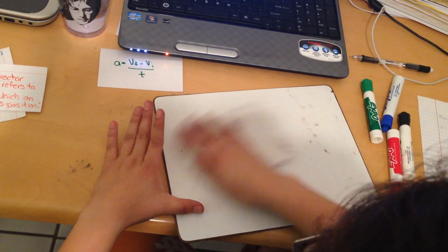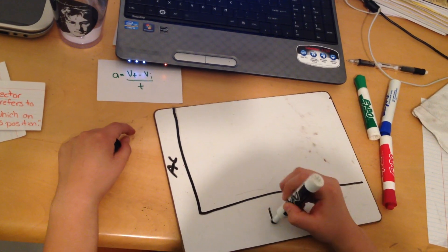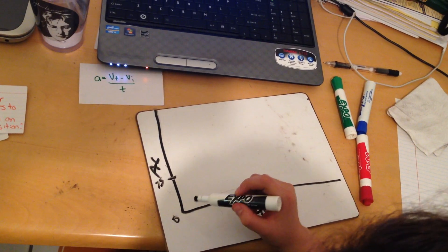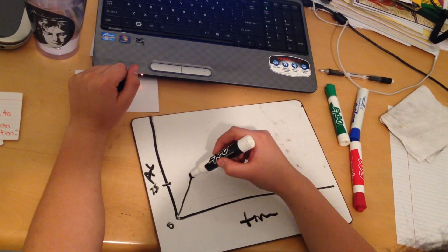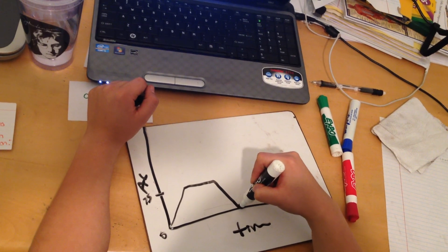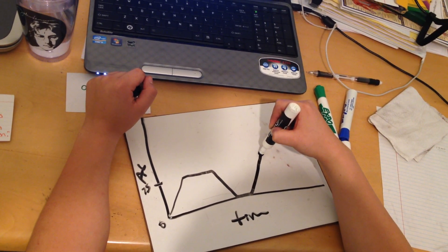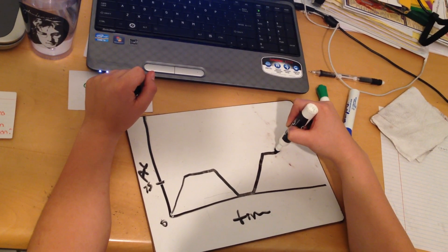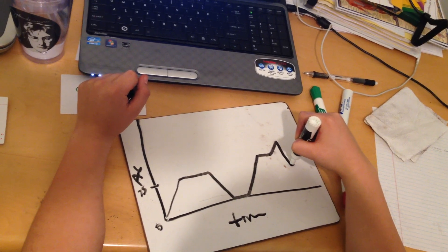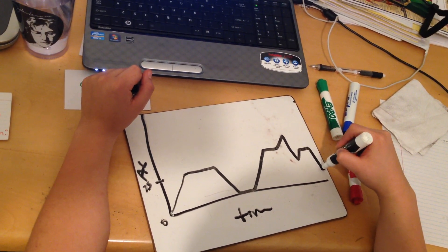On a graph with velocity on the y-axis and time on the x-axis, here's what a trip looks like. You start at zero and accelerate up to 75 miles per hour. Then you maintain that same velocity — a flat line. Then you slow down because grandma has to go to the restroom, you stop, put gas, then get back on the road and accelerate again. You try to make up time by going a little faster, but then you spot a cop and slow back down to your regular speed. Finally you maintain that speed until you reach your destination and slow to a stop.